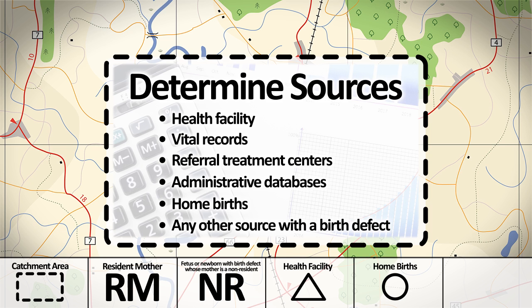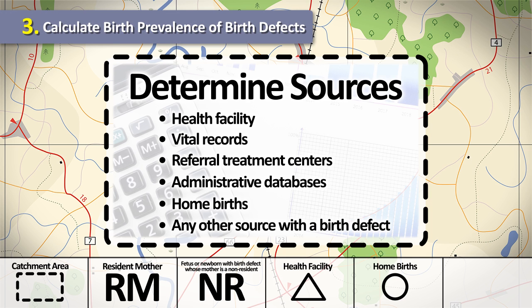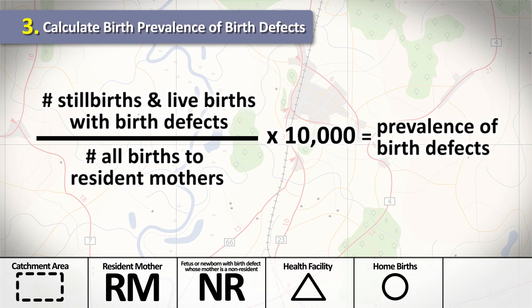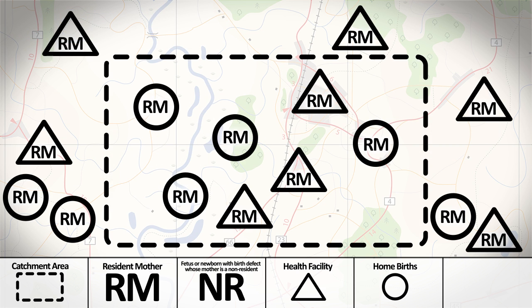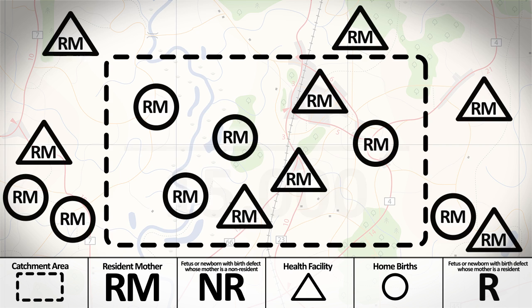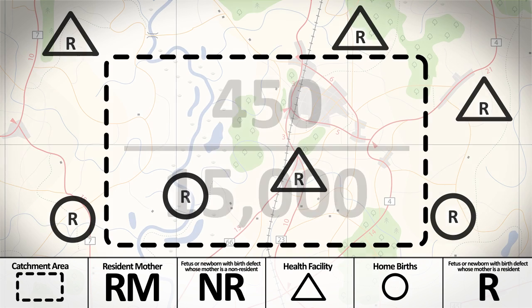Once you have established your catchment area, determined the birth defects and outcomes of pregnancy that will be monitored, and identified which data sources to use, you are ready to calculate the birth prevalence of birth defects among the population. Using numbers from the collected data, you use a standard equation to calculate the prevalence. First, count the number of all live births and stillbirths to resident mothers — this number is the denominator. Next, from those same births, count the number of stillbirths and live births with birth defects — this number is the numerator.